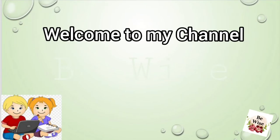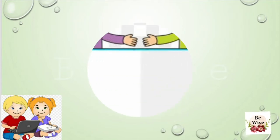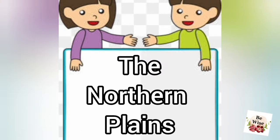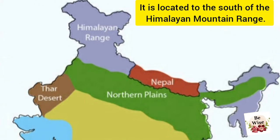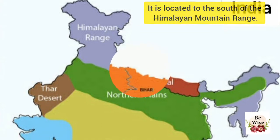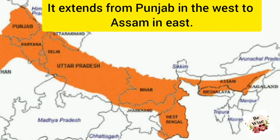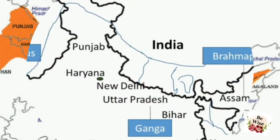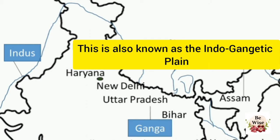Welcome to my channel BeWise. Today we will learn about the Northern Plains. The Northern Plain is located to the south of the Himalayan mountain range. It extends from Punjab in the west to Assam in the east. This is also known as the Indo-Gangetic Plain.